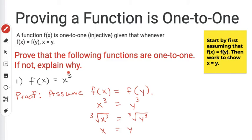Now that I have x equals y, I can say that this function is one to one. So I say, therefore, f(x) is one to one. And I can end my proof right there.